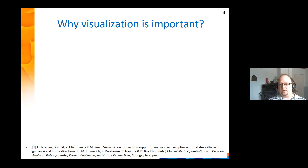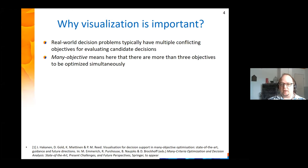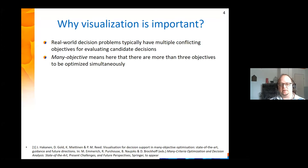Let's start by asking why visualization is important in this context. Real world decision problems typically have multiple conflicting objectives for evaluating candidate decisions. The term 'many objective' in the title means there are more than three objectives to be optimized simultaneously. From the visualization perspective, the situation gets more challenging when you have more than three objectives, though the tools and ideas can also be applied to problems with two or three objectives.